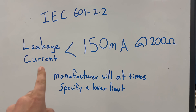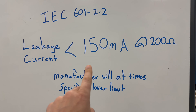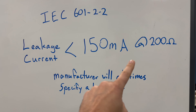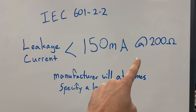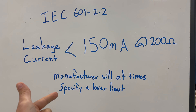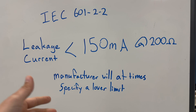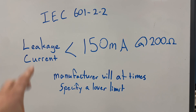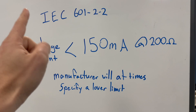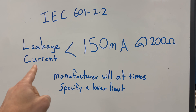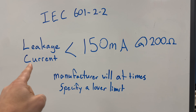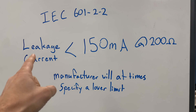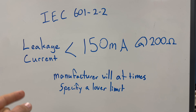In general, the leakage current needs to be less than 150 milliamps when the test load is set to 200 ohms. Sometimes the manufacturer is going to specify a different lower limit, and a lot of times that's dependent on the type of mode you're in. Manufacturers will often specify lower leakage limits for things such as bipolar mode and leak-assured mode, so always make sure to check your manufacturer for their leakage current limits.